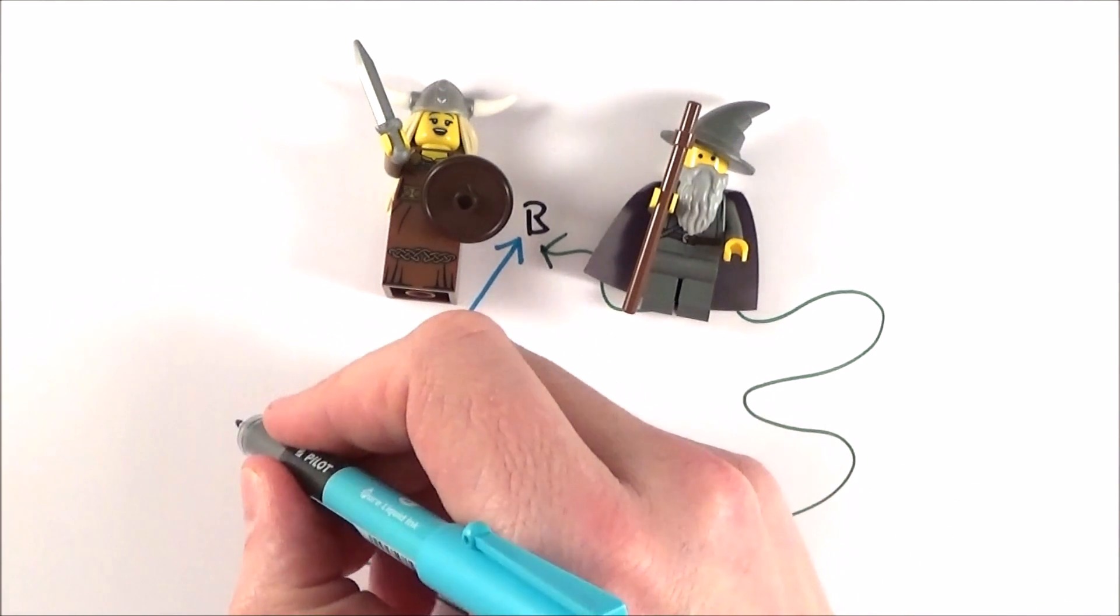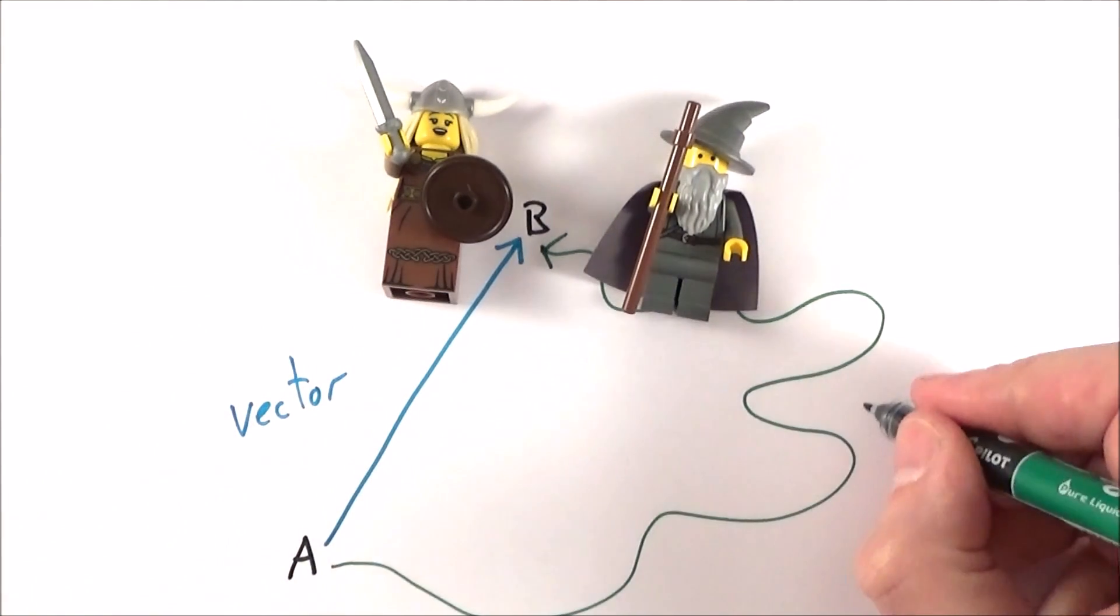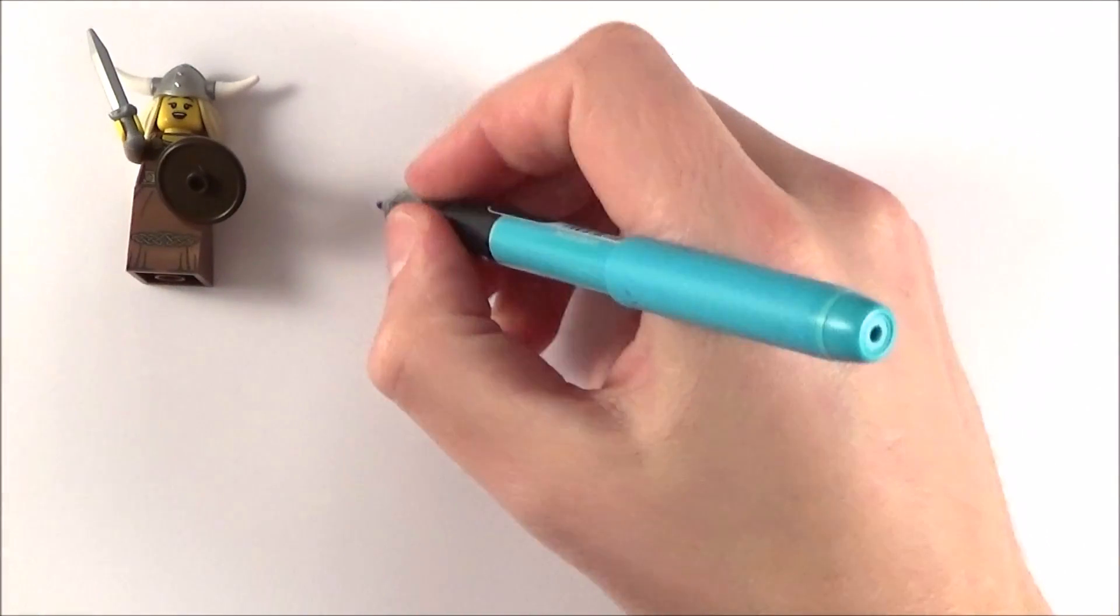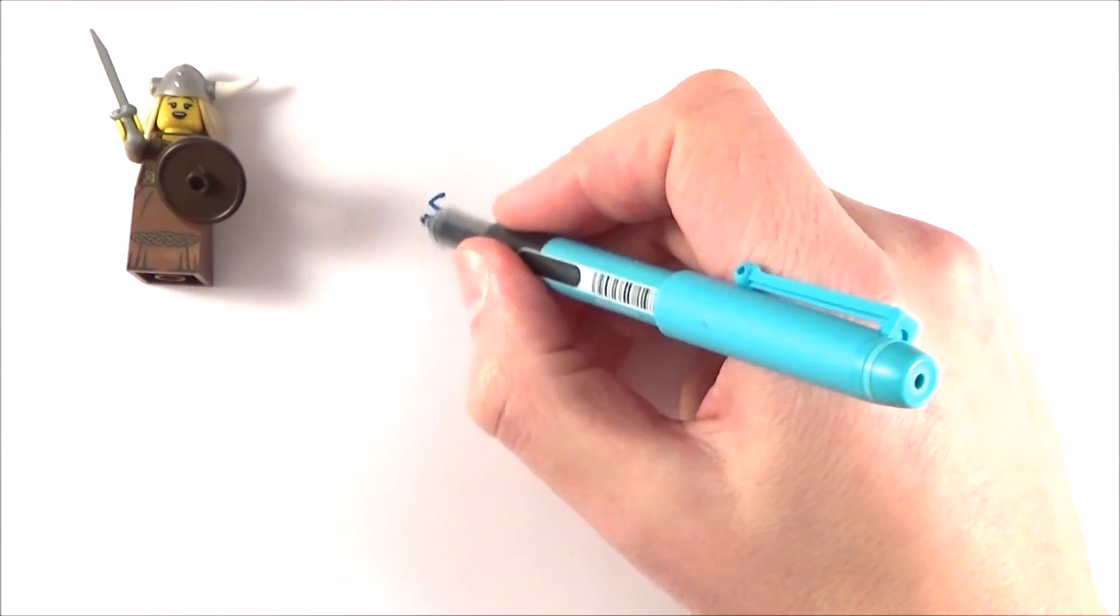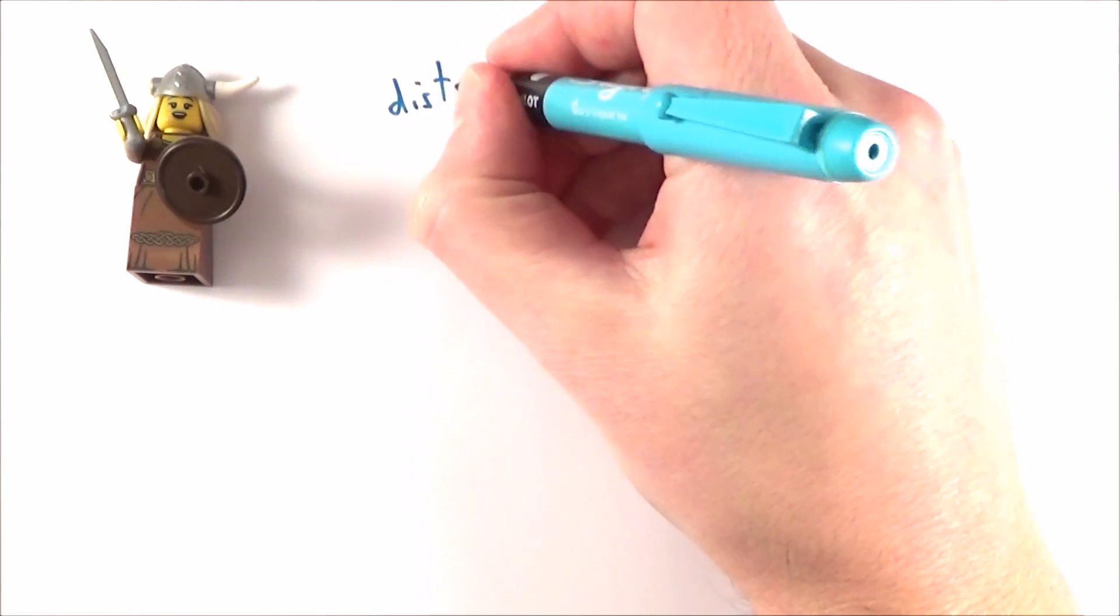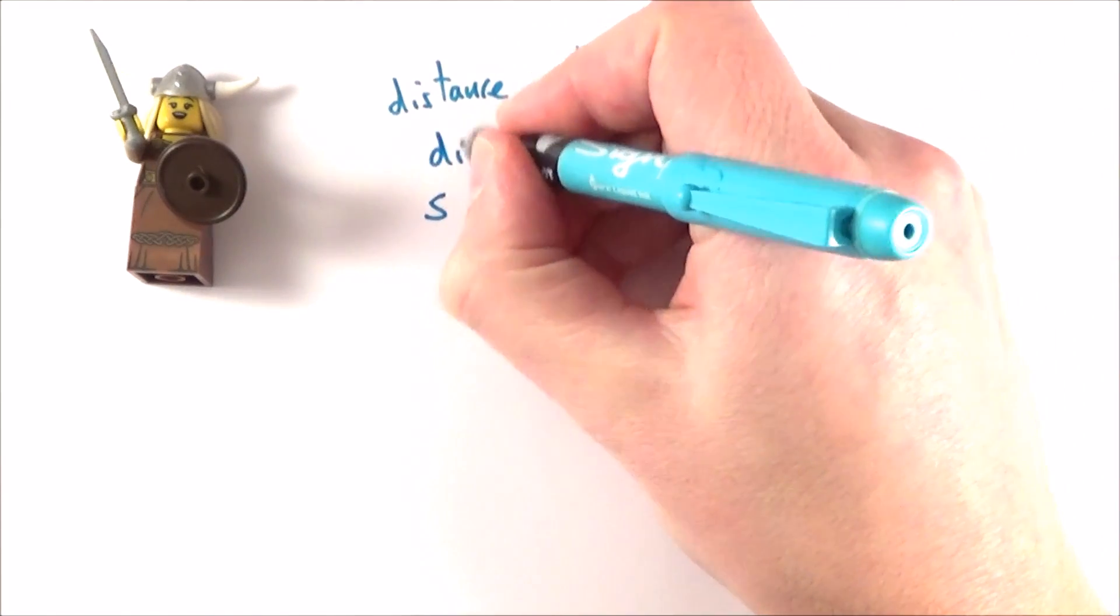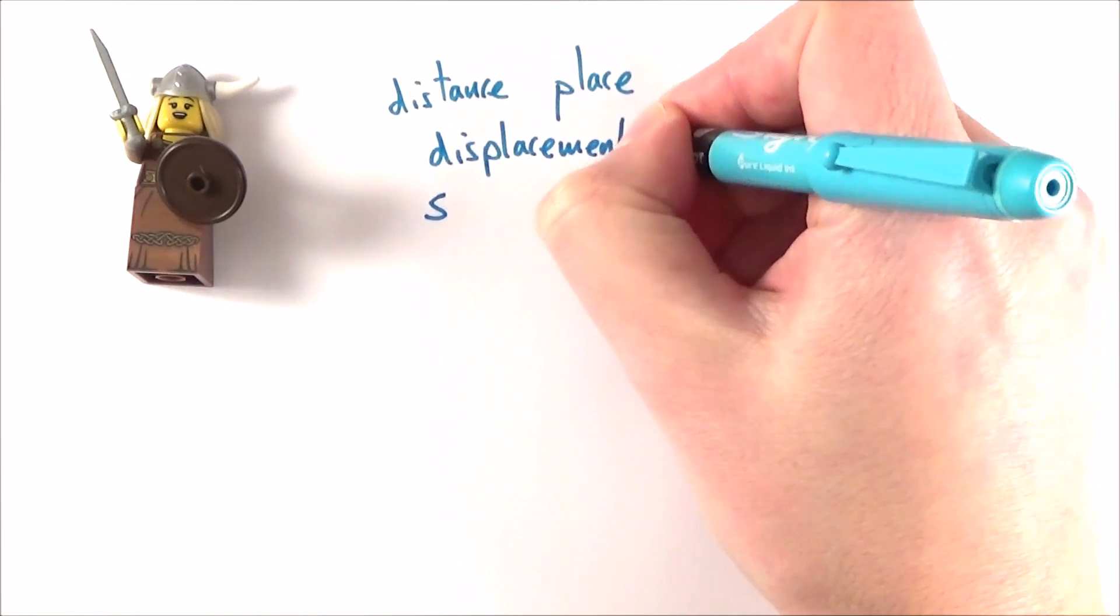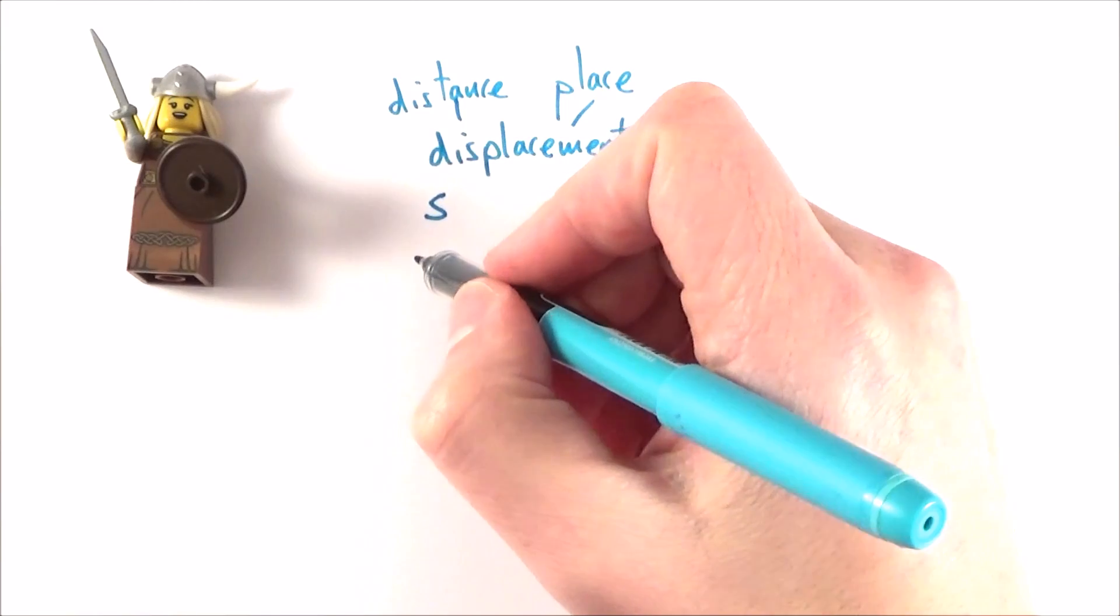This is a great example to show the difference between a vector quantity and also a scalar. The Viking lady, she travelled a certain distance in a certain direction so I'm going to call S. Now S stands for the distance from a certain place and we call this the displacement. And we represent it with the symbol little s which is a bit confusing.